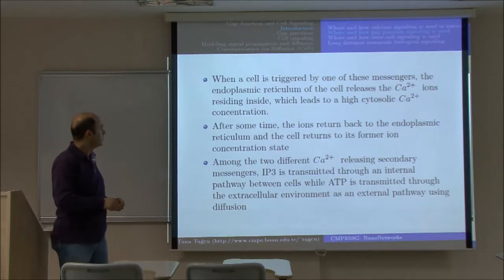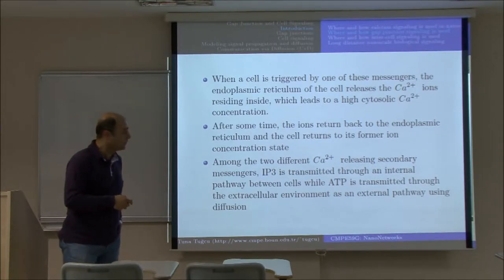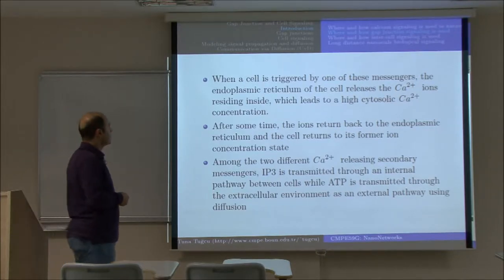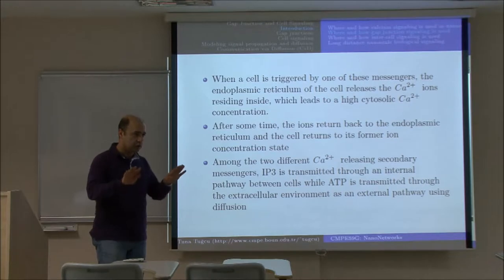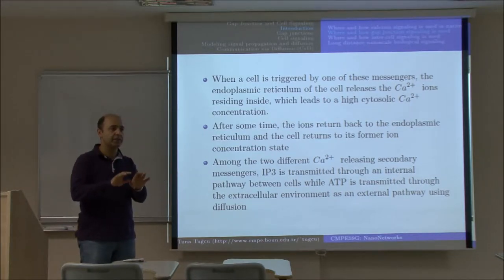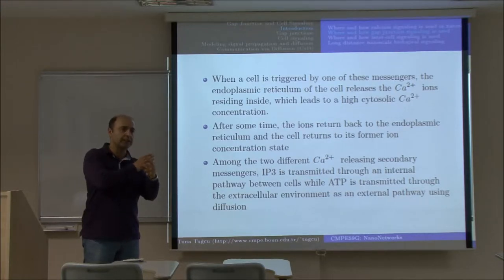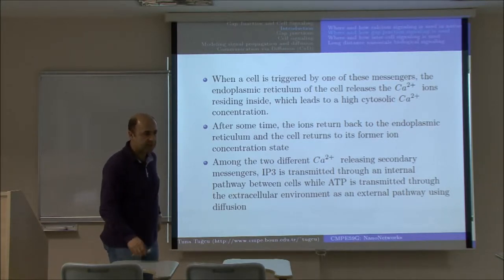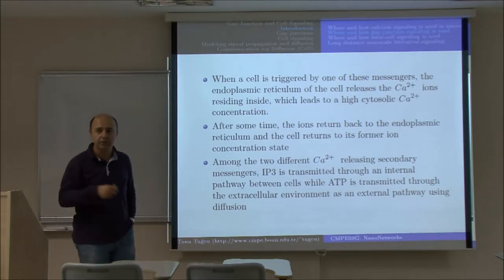Welcome back. We will continue from the slide where we stopped last week. Remember, we were discussing gap junctions in general. The gap junctions were set up between two neighboring cells, which both opened gap junctions aligned together so that messenger molecules can flow from one cell to the other, and with the flow of these messenger molecules we are able to create a signal which can carry information.